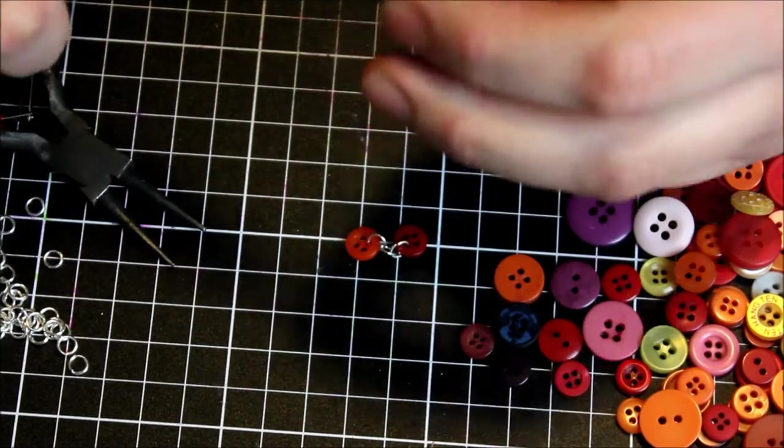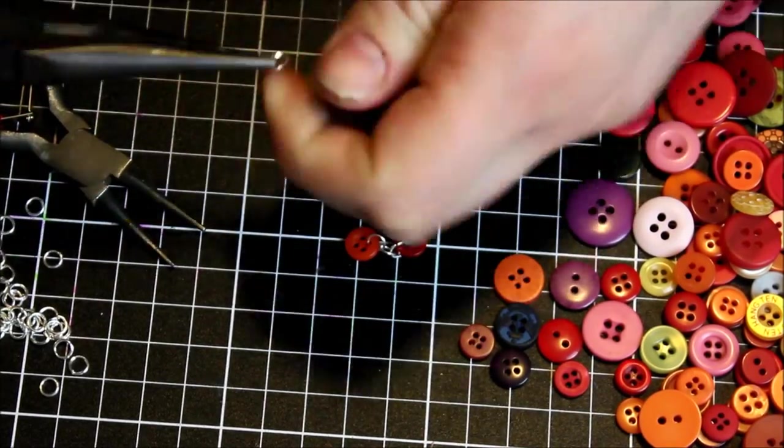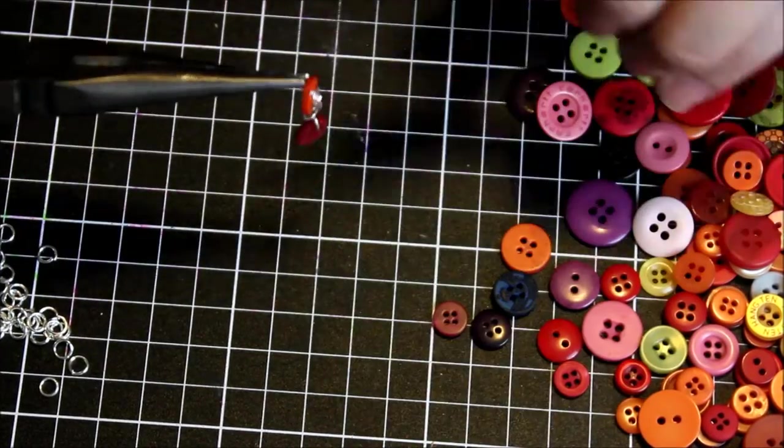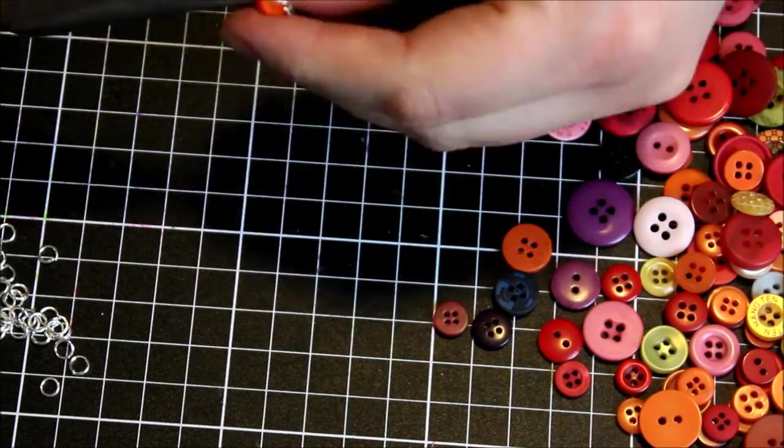So for my first line of my necklace I connected all my buttons together by adding three links in between each one. So the first one I would open up and connect through one of the holes of my buttons.